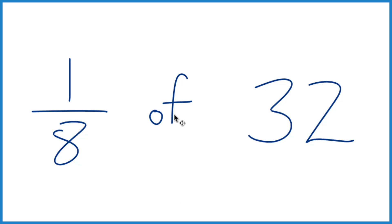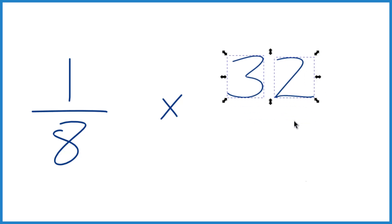First thing you do, take that 'of' and replace it with a multiplication sign. Now we have one-eighth times 32, and I'm going to make the 32 a little bit smaller and call that 32 over 1. 32 divided by 1 is still 32, but now everything lines up nice.